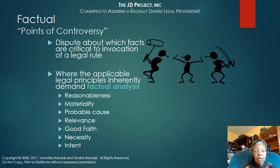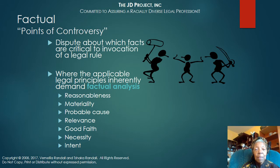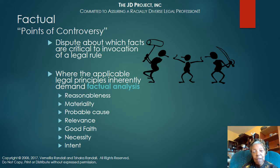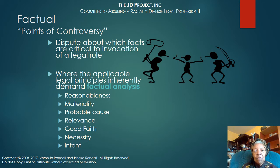Factual points of controversy occur when the facts are critical to a particular legal rule. Generally, people think: how can you have a factual controversy? Facts are facts. But where the legal principle demands a factual analysis, you can have different interpretations of what that means. Anytime a rule calls for reasonableness — even though we use a reasonable person standard — the question becomes: who is that reasonable person?